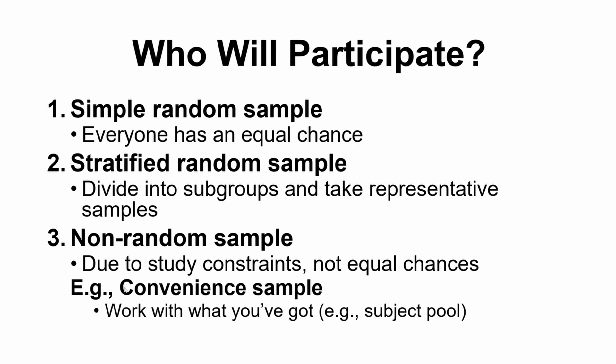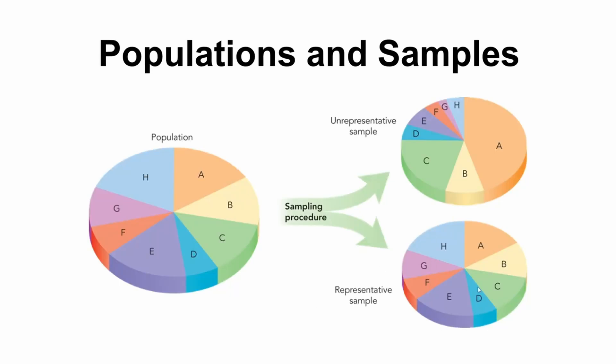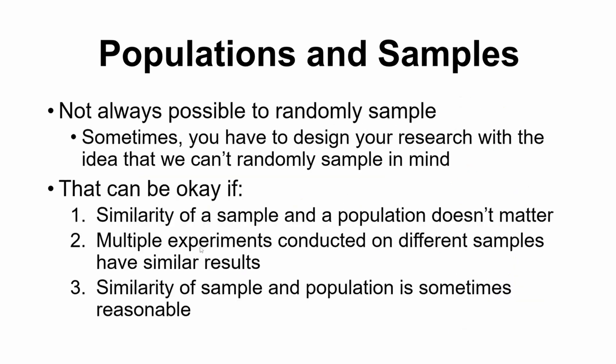Our example of a subject pool would be called a convenience sample — we're working with what we have. There are tons of other ways to non-randomly sample, like snowball sampling. It's really common for medical research when you have a very rare group with a particular disease — you find a couple of individuals and ask them to put you in contact with other people they know with that disease. That gets you access to more participants, but because you've actively targeted people, your sample is biased. So we want a representative sample as much as possible, but it's not always achievable.